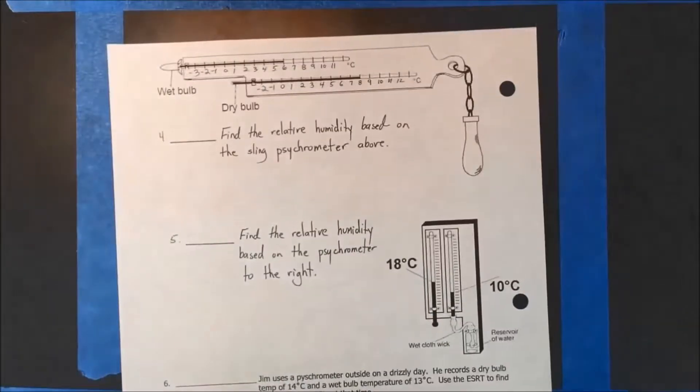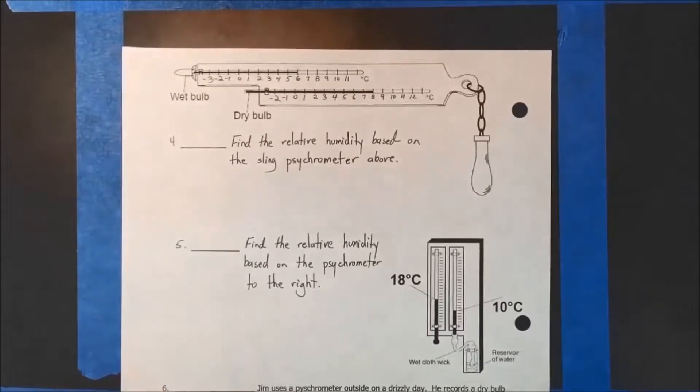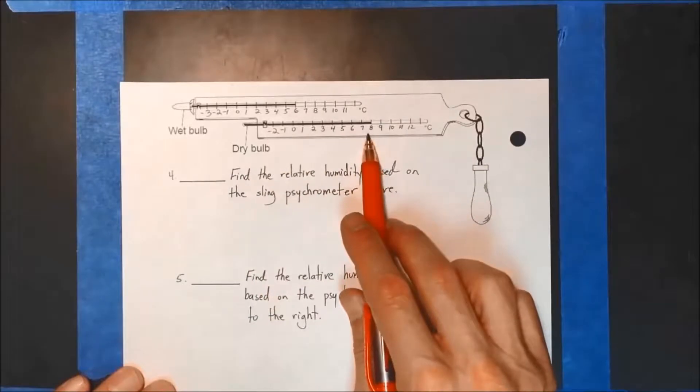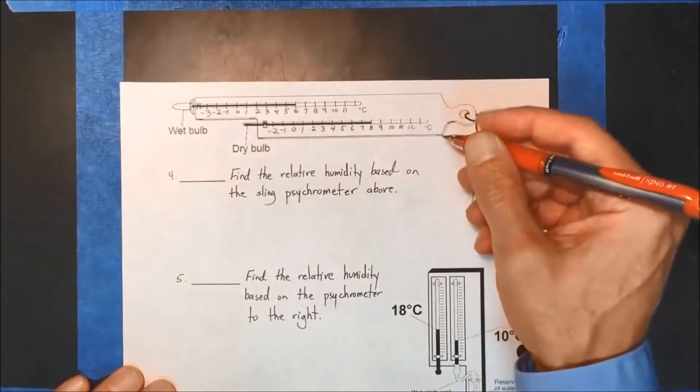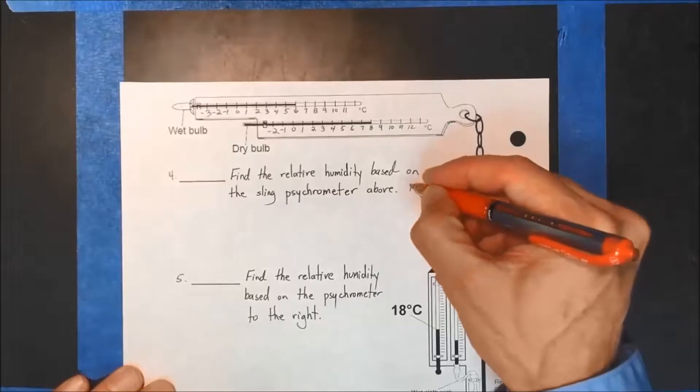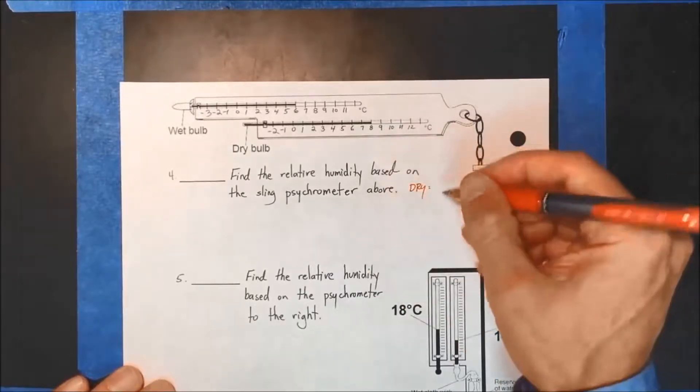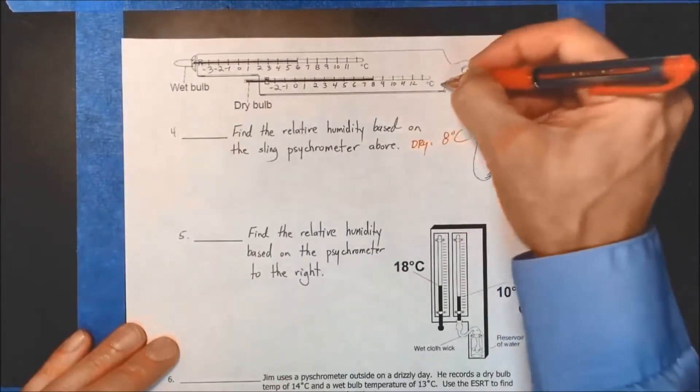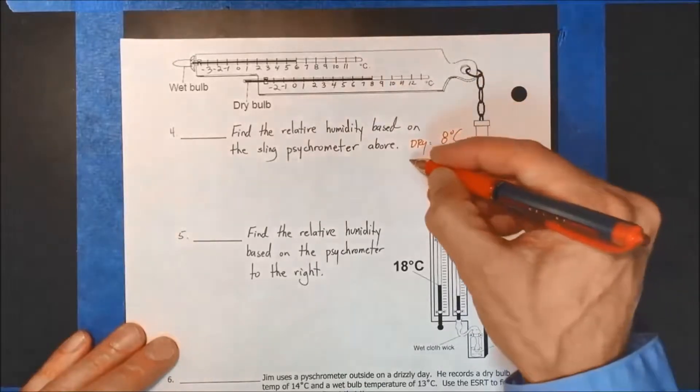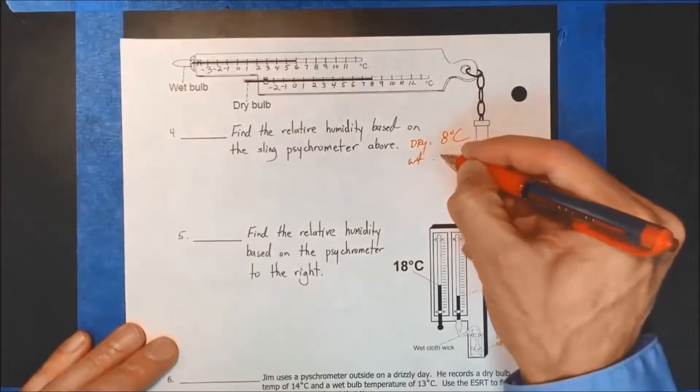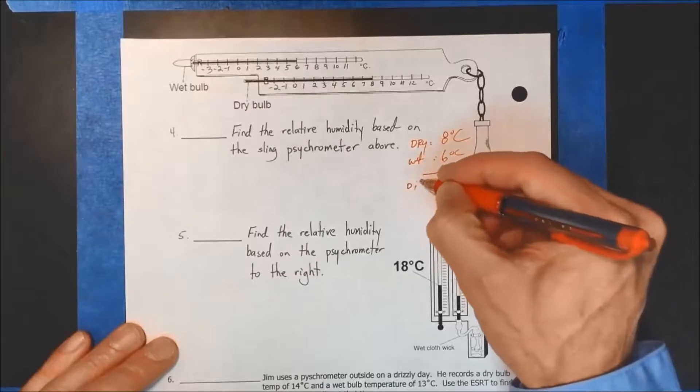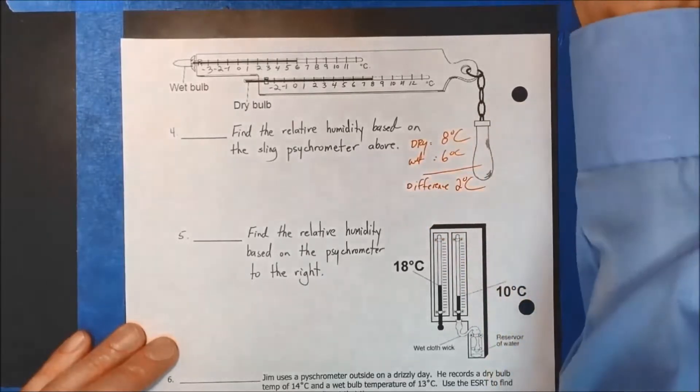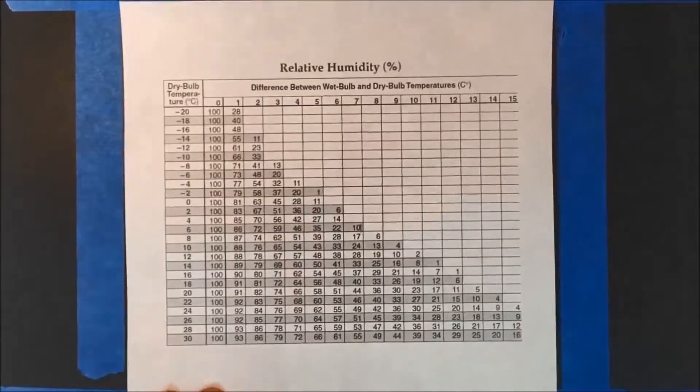Here we go. On the back. Find the relative humidity based on the sling psychrometer above. Let's look what we got. So this is the dry bulb on the bottom. This is the wet bulb here. Dry bulb, it's always good to write it down. Shortcuts and not writing it down can lead to errors. I make mistakes as well when I don't. Dry bulb is 8 degrees C. And this is also in C, that's 6 degrees C. Wet bulb is 6 degrees C. So find the difference is 2 degrees C. Okay, back to our reference table.